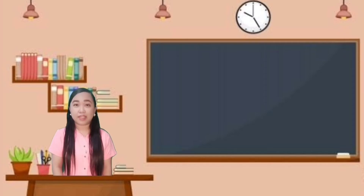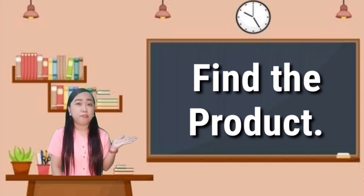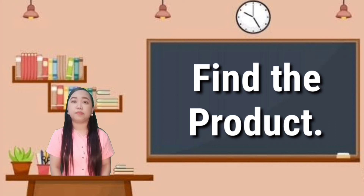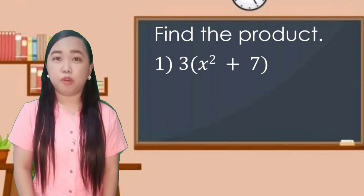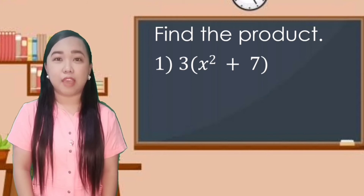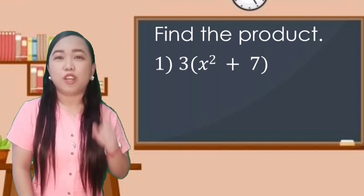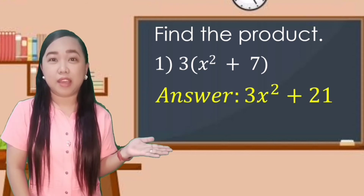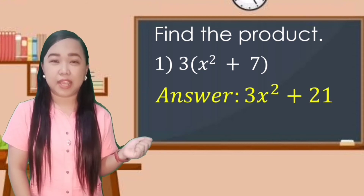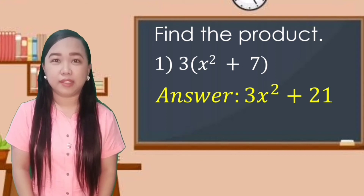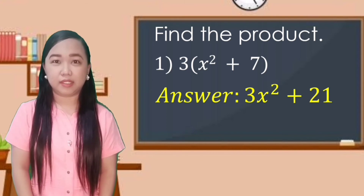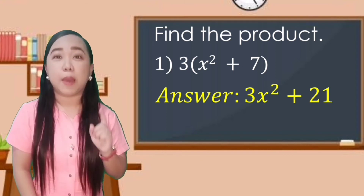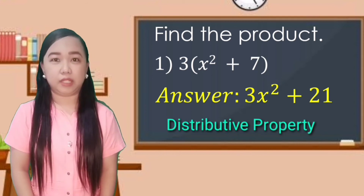Let's start the discussion by finding the product of these expressions. For 3 multiplied by the quantity of x squared plus 7, the answer is 3x squared plus 21. You get the product by applying the distributive property.